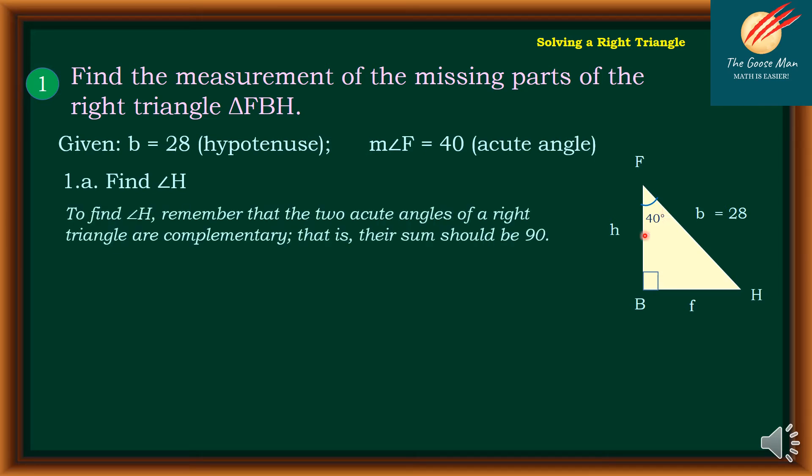To find angle H, remember that the two angles, angle F and angle H, are complementary. It means that the sum is equal to 90 degrees. So if we have the measure of angle H plus the measure of angle F equals 90 degrees.